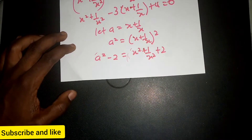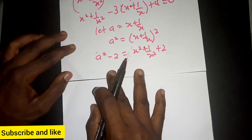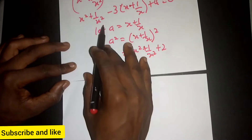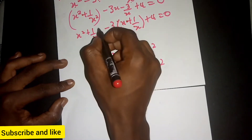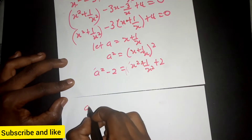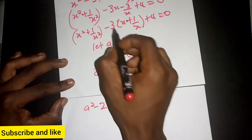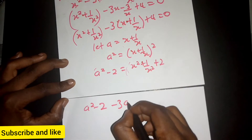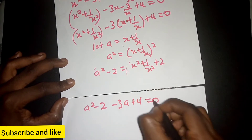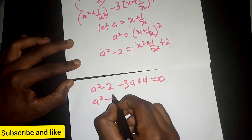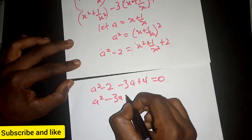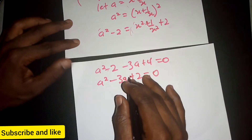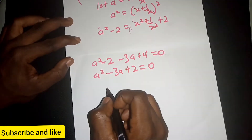We are going to replace s squared plus 1 over s squared with a squared minus 2 in our equation. So we get a squared minus 2, then minus 3 times a, plus 4 equal to 0. Simplifying: a squared minus 3a, then minus 2 plus 4, which gives a squared minus 3a plus 2 equal to 0.